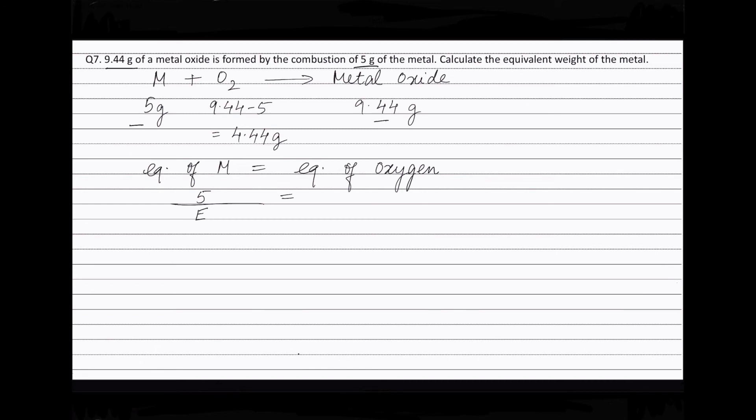Equivalence of oxygen will be weight of oxygen (4.44 grams) divided by equivalent weight of oxygen, that is 8.